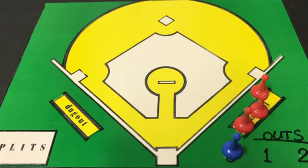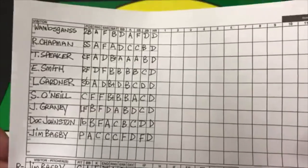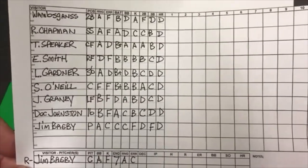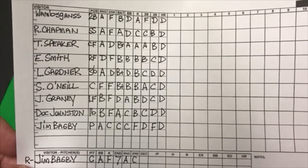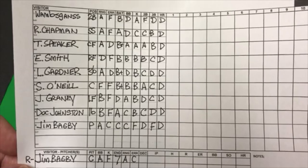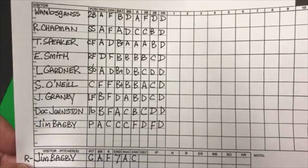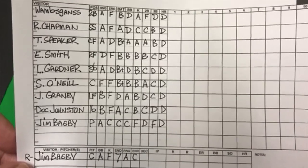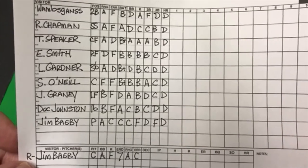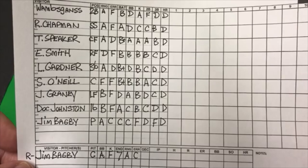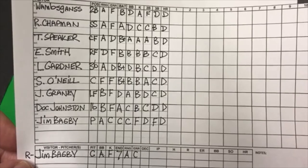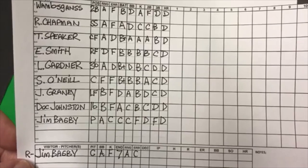Today's pitching matchup for the Indians will be Jim Bagby, and for the White Sox it will be Eddie Seacott. Cleveland's lineup starts off with Wambsganss — I don't know how to pronounce that name — Ray Chapman before he was killed by Carl Mays, Tris Speaker in center field, Elmer Smith at right field, Larry Gardner at third, Steve O'Neill catching, Graney in left field, Doc Johnston at first, and Bagby batting ninth as the pitcher.